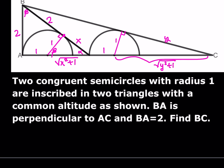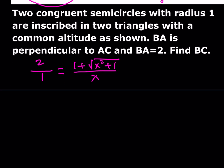Let's start with the larger triangle containing alpha. Across from alpha, we have 2. In the smaller one, across from alpha, we have 1 — so we have a 2-to-1 ratio. Going back to the big one, what is across from beta? In the larger triangle it's going to be 1 plus the square root of x² + 1. And in the smaller one, across from beta is x. So we set up a proportion and cross-multiply.